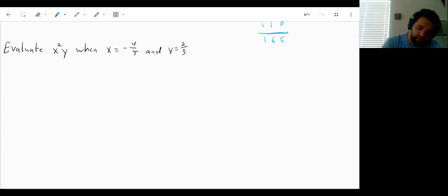Well, the first thing I'm going to do is I'm going to realize that x squared times y is the same as x times x times y. So now I can go and substitute this negative 4 fifths in for both of our x's and that 2 thirds in for y.